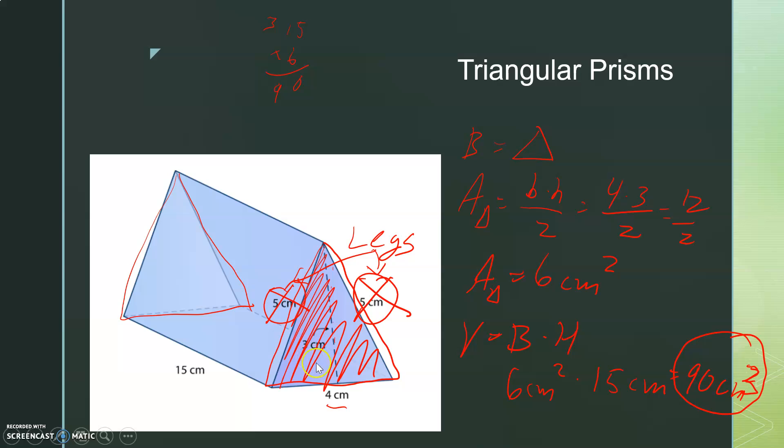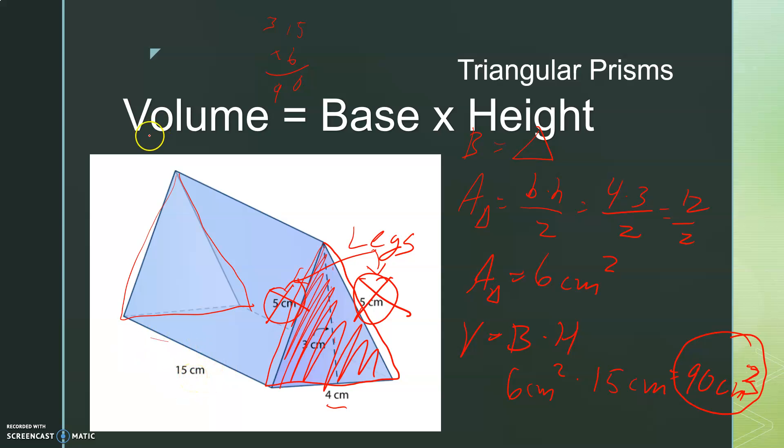The only things we used here were the base of the triangle, little b, which was 4. We used the little h height of the triangle, which was 3. And we used the big height of the entire prism, which was 15. Because volume was base times height, and the base was the triangle. Height was still 15. Hope that helped.